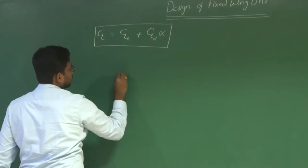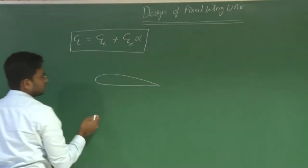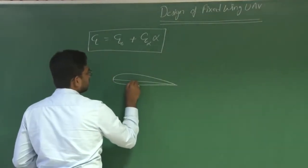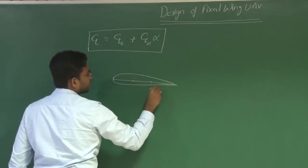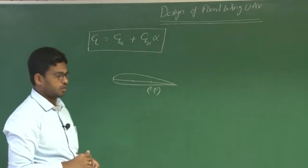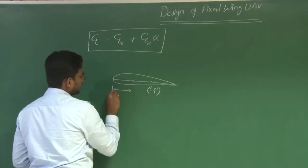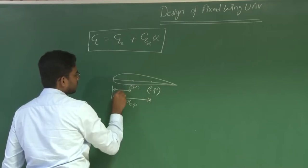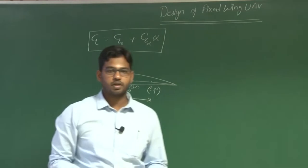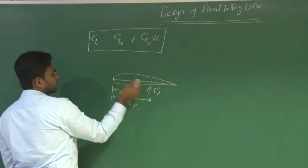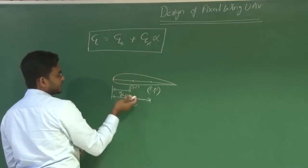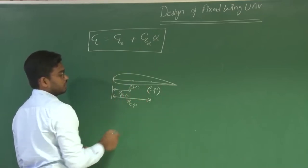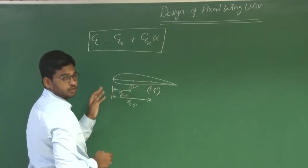We defined two important parameters: aerodynamic center and center of pressure. Center of pressure is a point about which resultant aerodynamic forces act — about the center of pressure, the pitching moment is zero. Aerodynamic center is defined as the point about which pitching moment remains constant with angle of attack. Let us consider an airfoil where x_ac is the distance of aerodynamic center from the leading edge and x_cp is the location of center of pressure with respect to the leading edge.